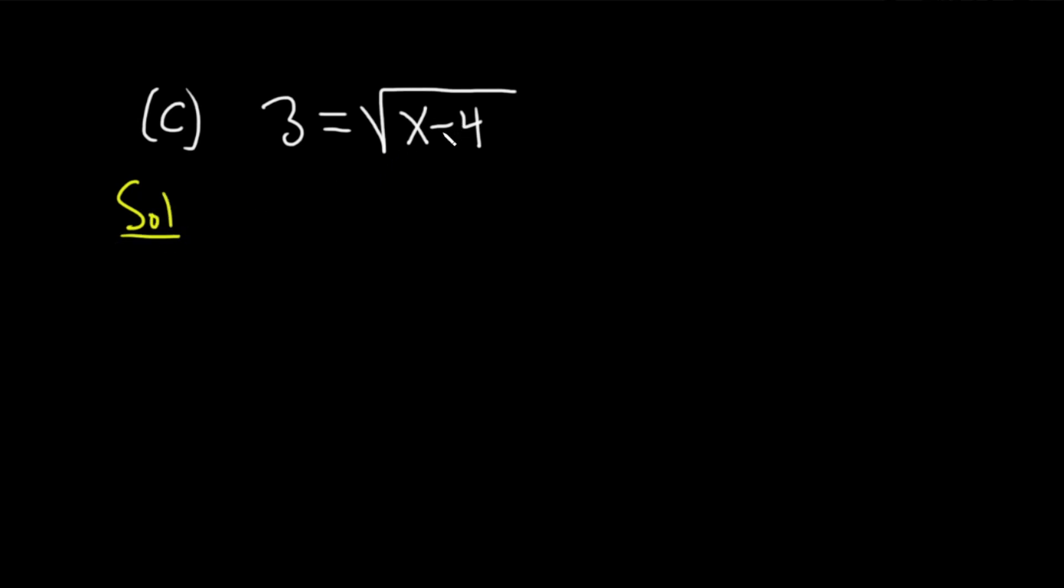So whenever you have an x and it's in some type of root, you want to get it out of the root. So in this case, we have a square root. So to eliminate the square root, what you can do is you can square both sides. I'm going to write down the equation again: 3 equals square root of x minus 4. And then you just square both sides. Square this.